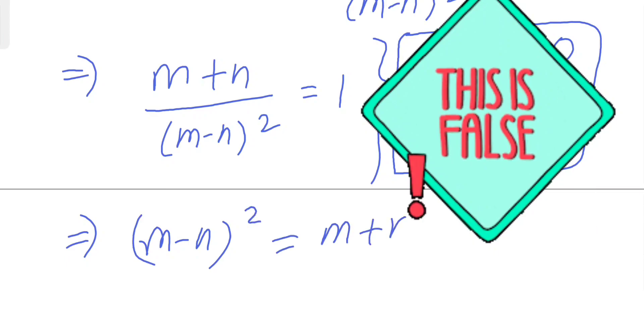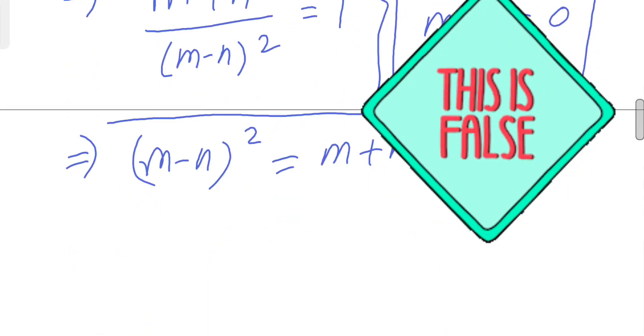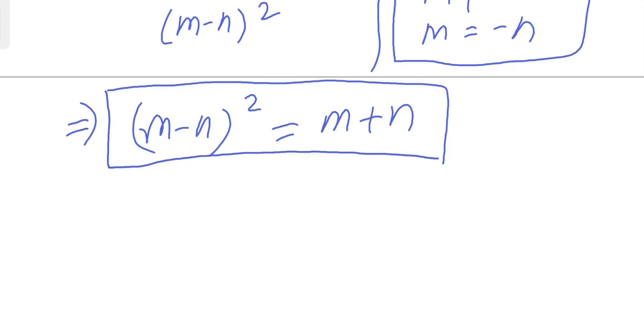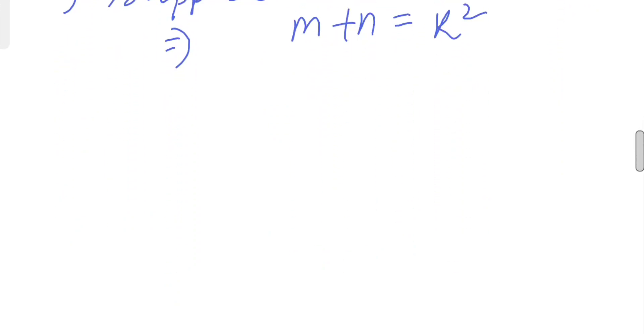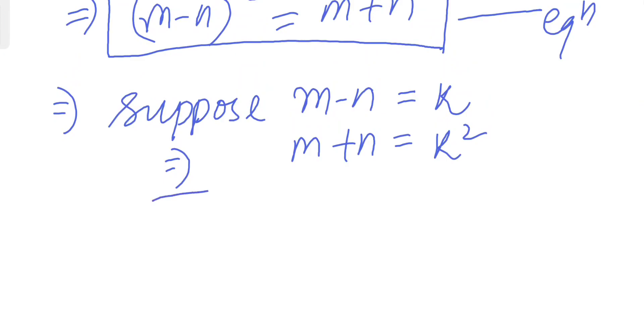Now here, what we'll do is suppose m-n equals k. Therefore, by this equation, m+n will give us k². Solving this set of equations, you just add them and simplify.